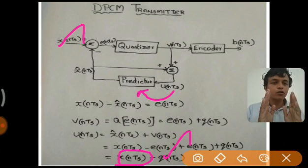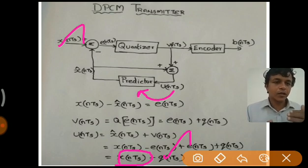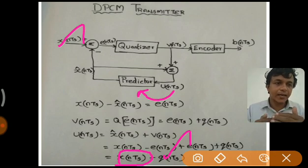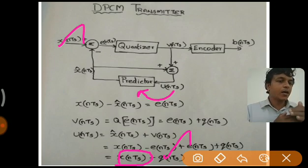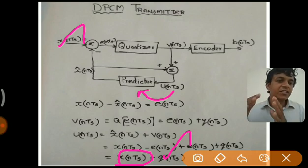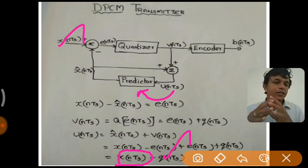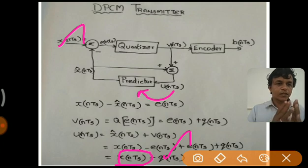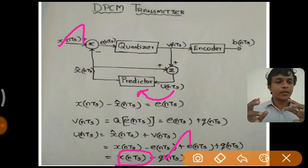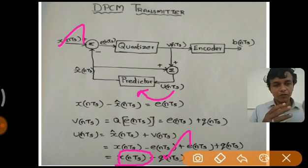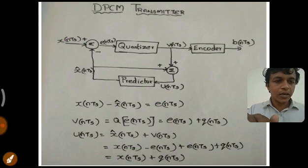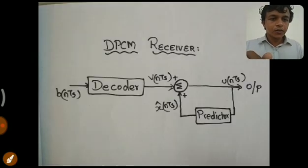This shows that DPCM works similarly to PCM in terms of performance — the prediction and predicted error do not degrade performance. The important role prediction plays is reducing redundant bits, but it does not negatively affect the system. So DPCM performs as well as PCM but in a more efficient way, utilizing bandwidth efficiently and greatly reducing the generation of redundant bits. This is the reason we go for Differential Pulse Code Modulation.